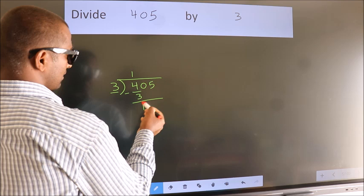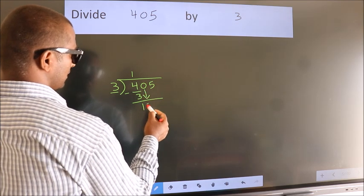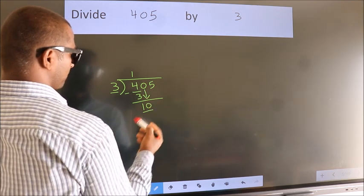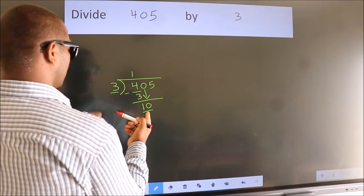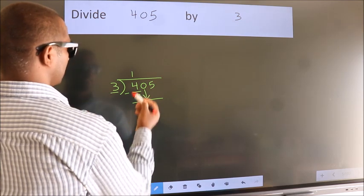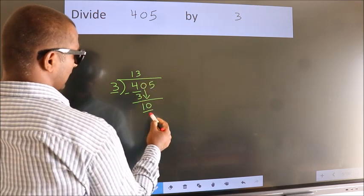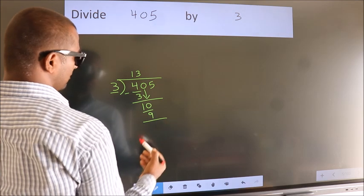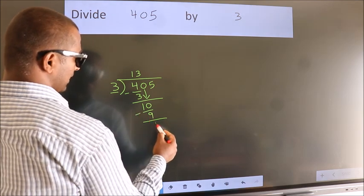After this, bring down the beside number. So, 0 down. So, 10. A number close to 10 in 3 table is 3 3s 9. Now, we subtract. We get 1.